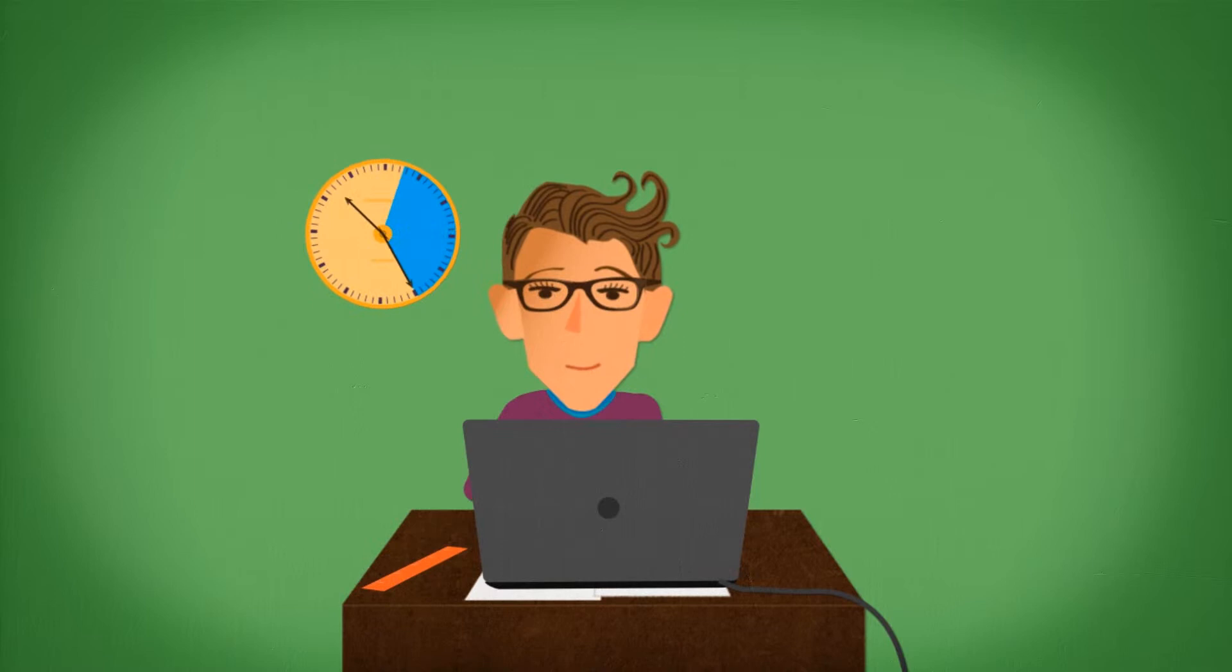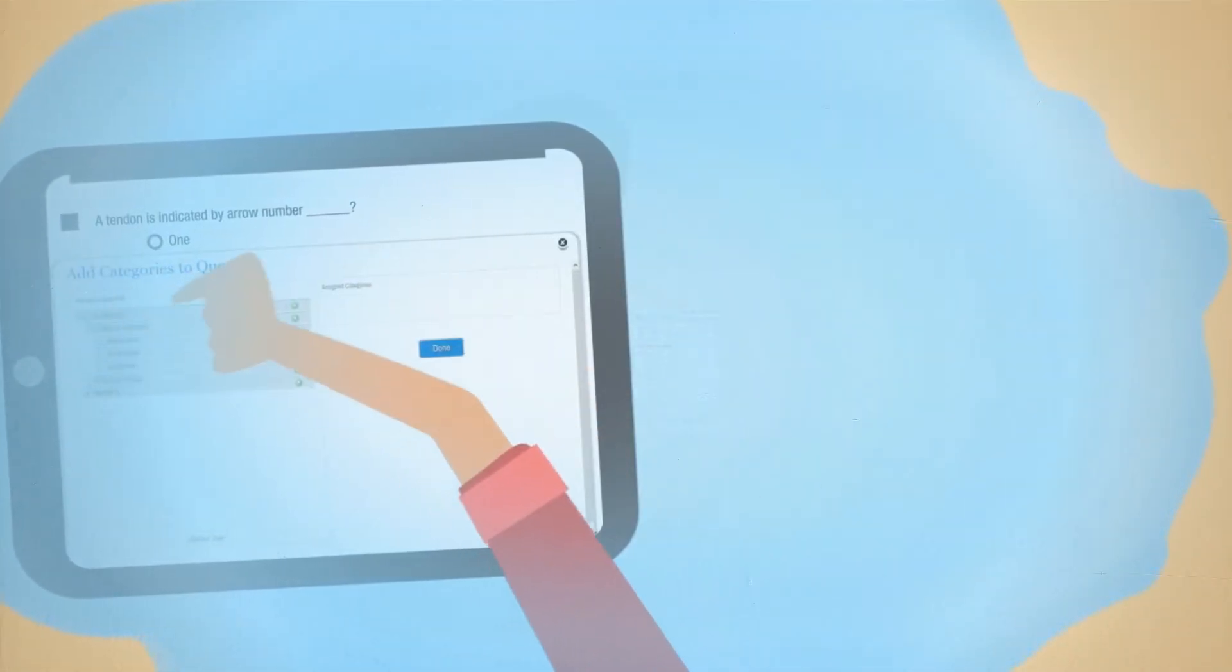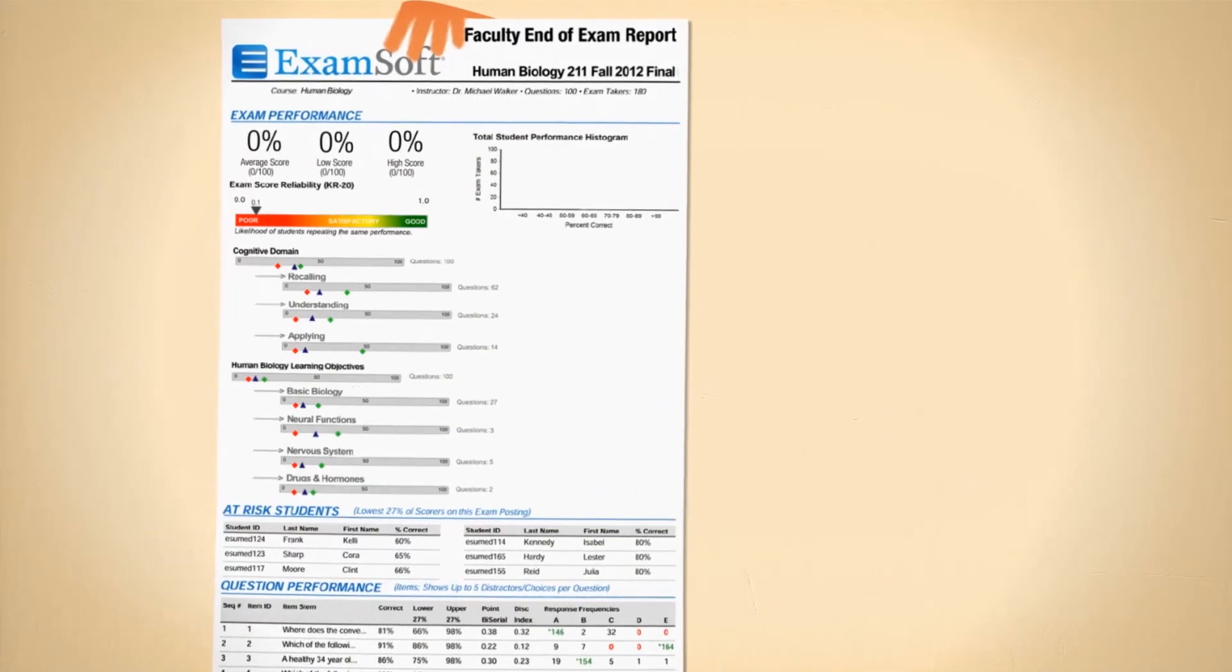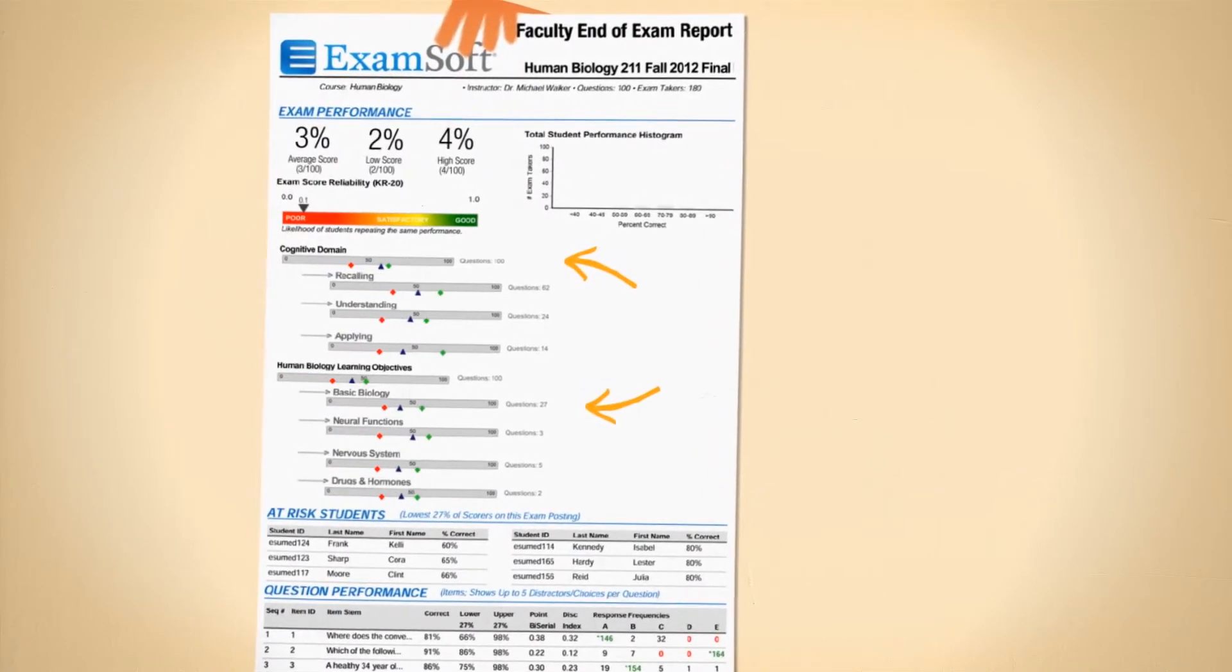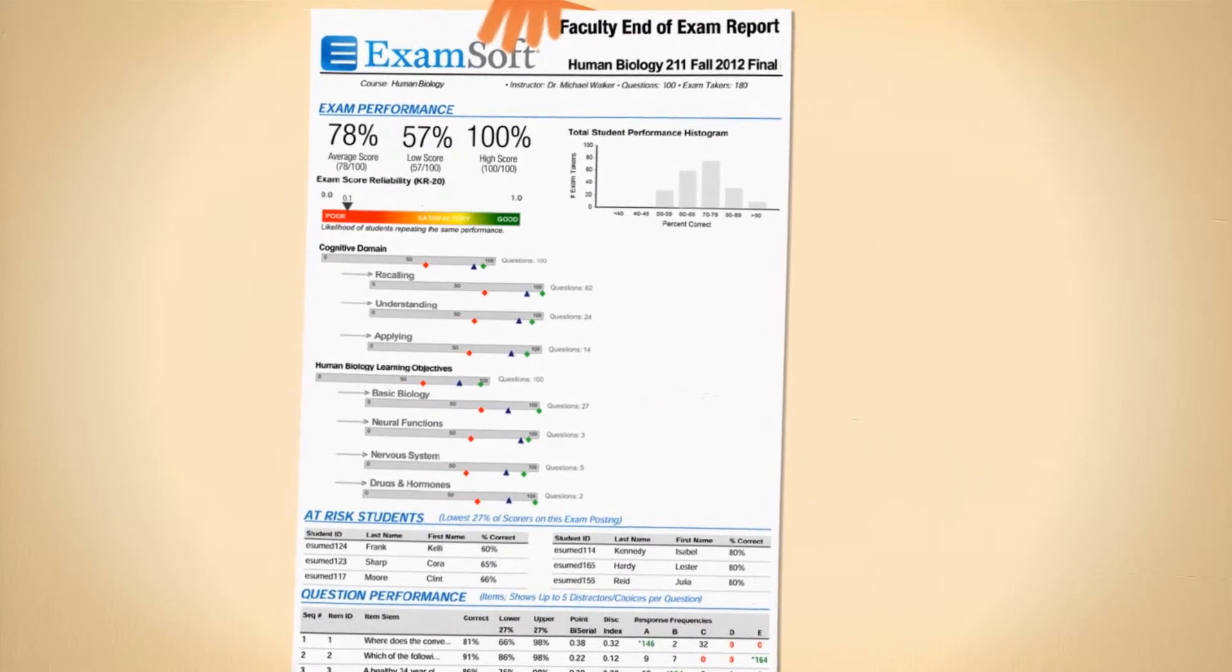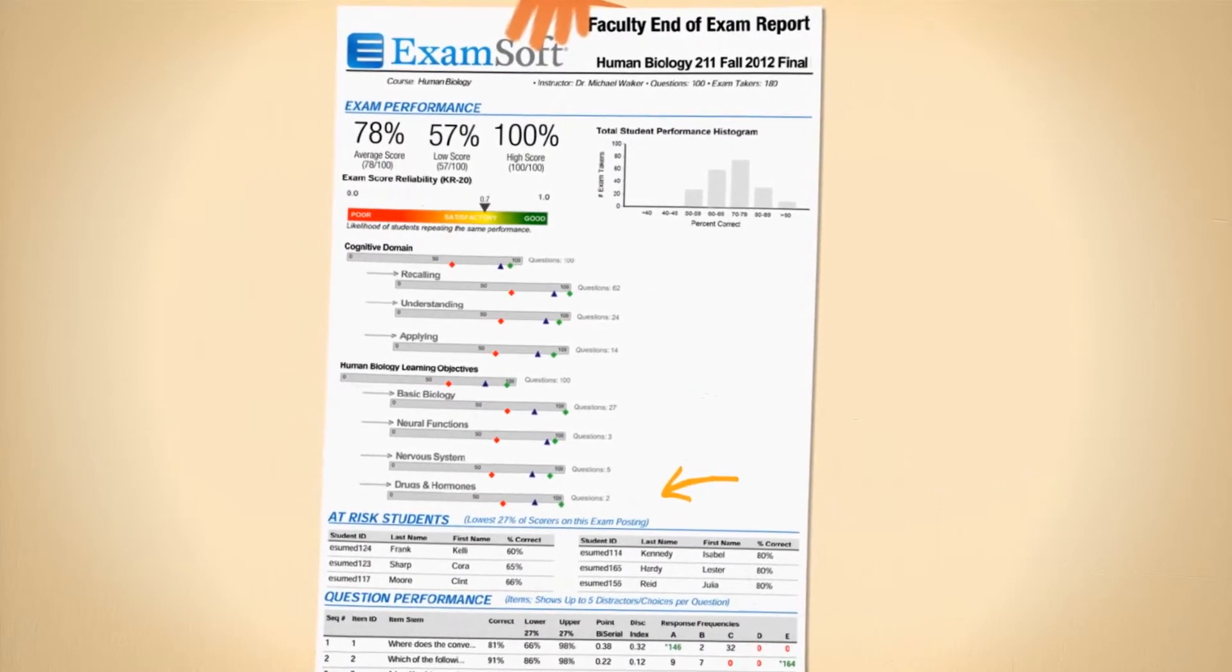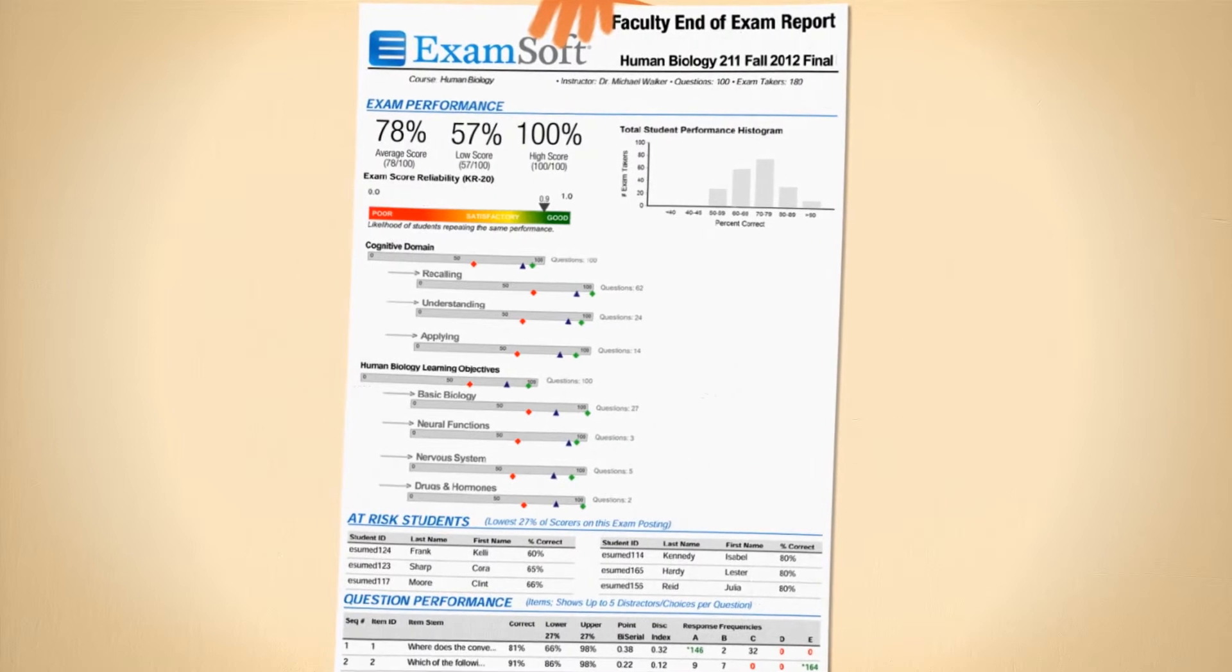With the exam complete, let's look at reporting. Remember that whole tagging thing? We use those tags to create a variety of different types of reports, from individual exam analysis and item and learning outcome reports, to longitudinal reports that show how your students, and your questions, are performing over time.